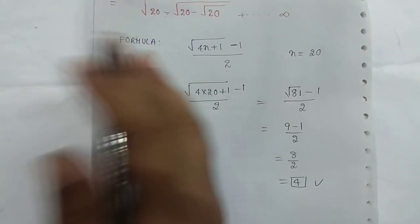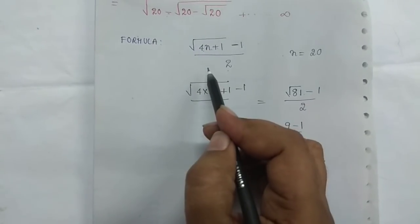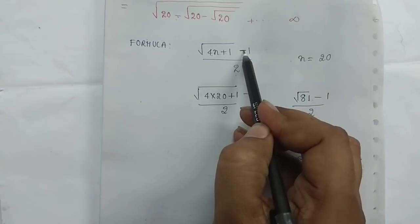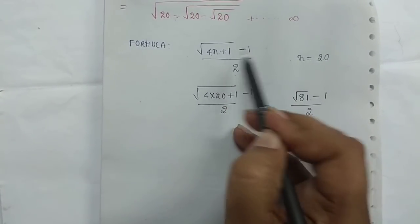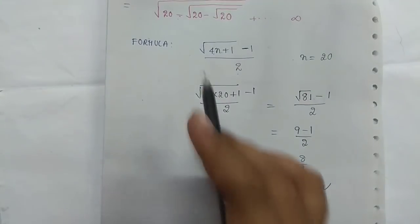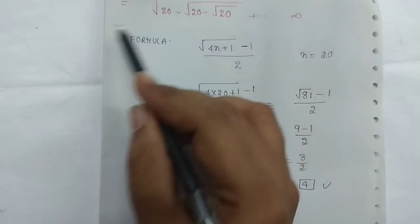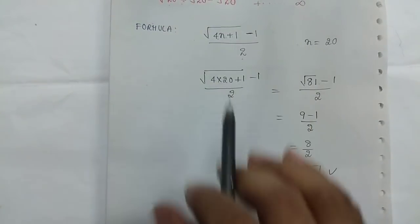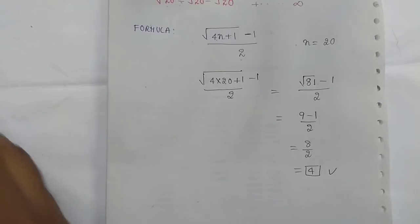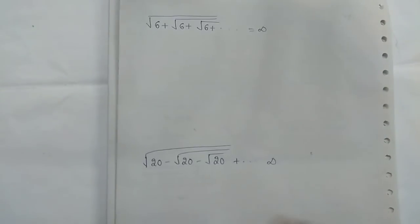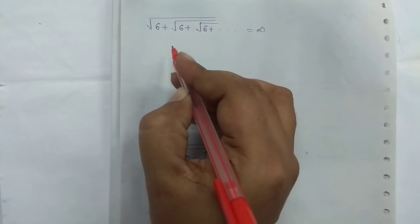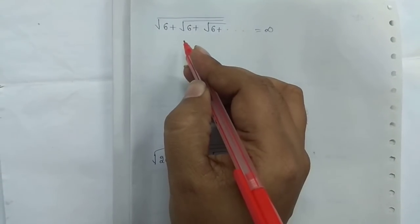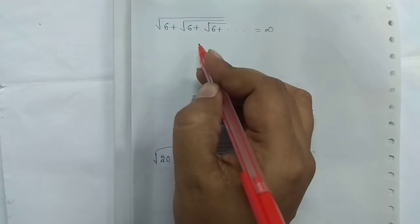So if you have a quadratic equation type, you can use the traditional method, or just use this formula. For the plus type, the formula is root of 4n plus 1, plus 1 by 2. For the minus type, it is minus 1 by 2. Just substitute and solve — it's very easy with the shortcut.